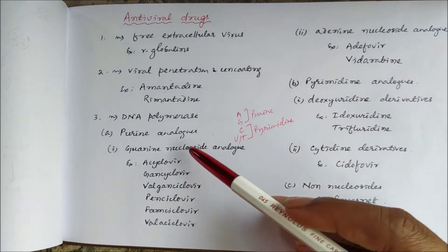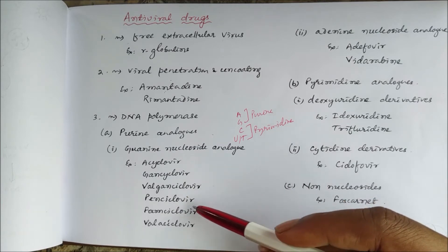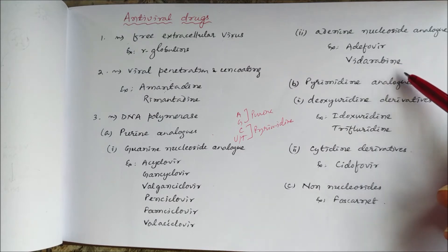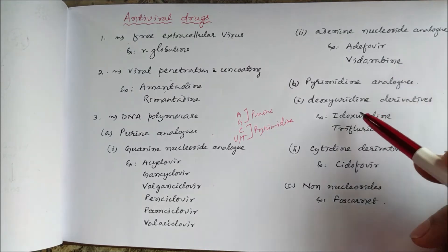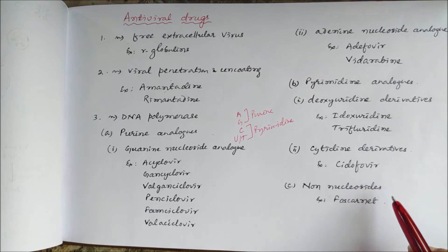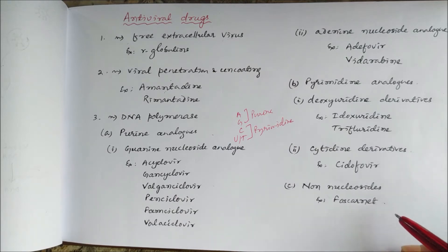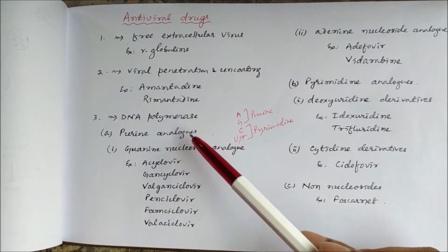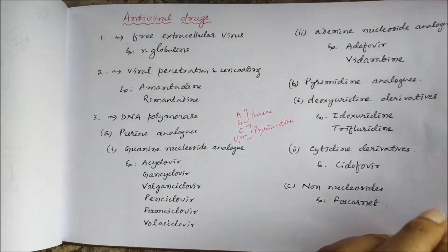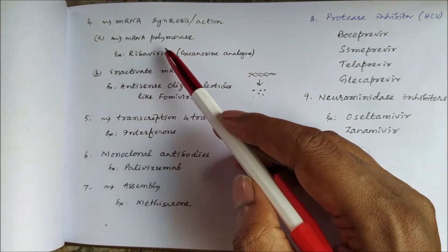Purine analogues include guanine nucleoside analogues like acyclovir, ganciclovir, valganciclovir, penciclovir, famciclovir, and valacyclovir. RNA nucleoside analogues include adefovir and vidarabine. Pyrimidine analogues include deoxyuridine derivatives like idoxuridine and trifluridine, and cytidine derivatives like cidofovir. In addition to these base analogues, non-nucleosides like foscarnet directly inactivate the catalytic site of DNA polymerase.